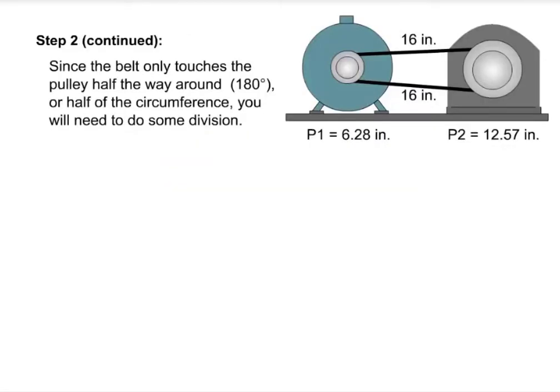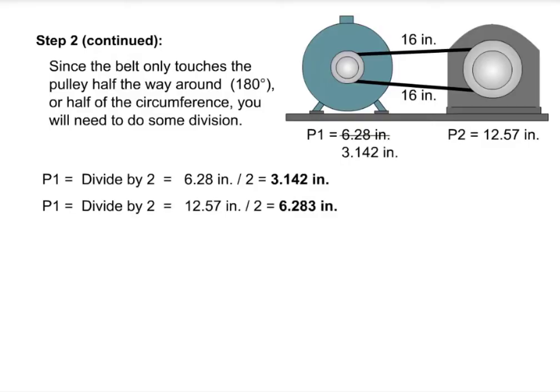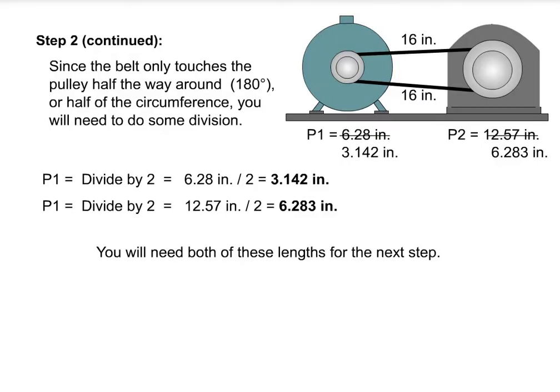Since the belt only touches the pulley half the way around, or half of the circumference, you will need to do some division. You will need both of these lengths for the next step.